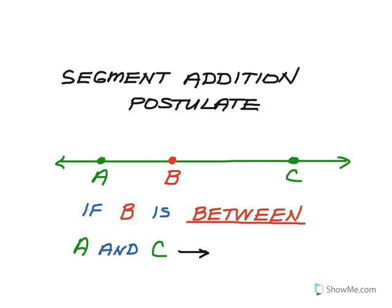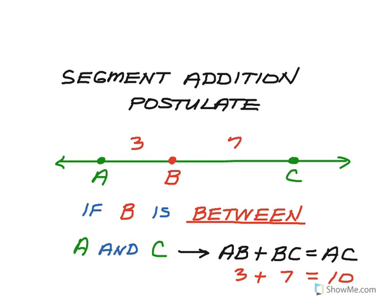Then it follows that if I add up the length of AB plus the length of BC, that will give me the total length of AC. So for example, if AB was three long and BC was seven long, then AC would be three plus seven or ten units long. Segment addition postulate.